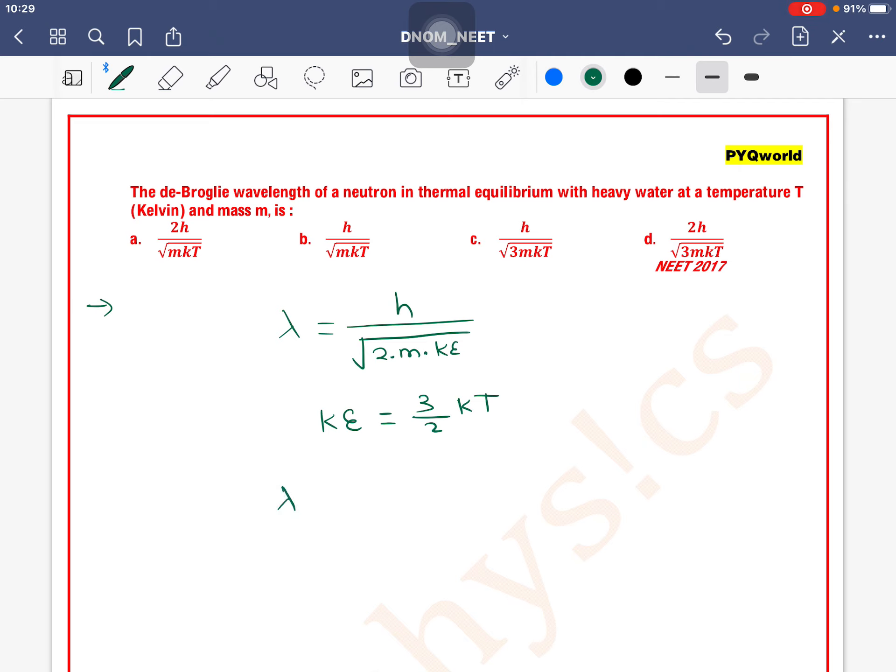So if we put this data in the above formula: h divided by the square root of 2 times m times 3/2 kT. The 2s cancel out, so this will be h divided by the square root of 3mkT.